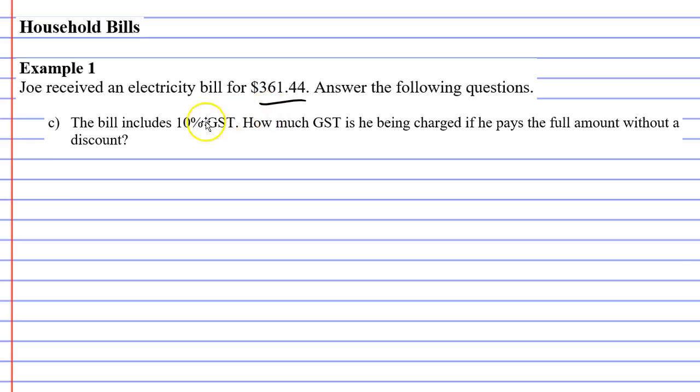What a lot of people do is they make a really big mistake. They think this is a really easy question and they just calculate 10% of $361.44 and think they've found the GST. But this doesn't work, and I'll explain why.